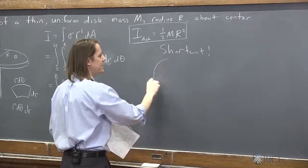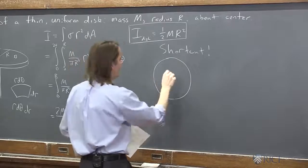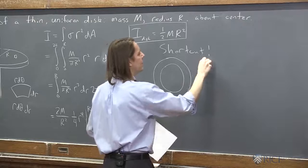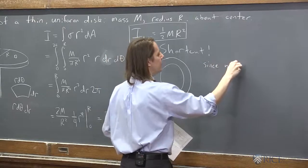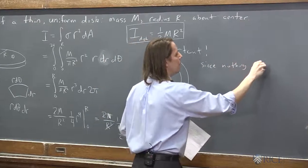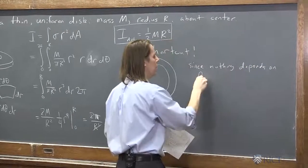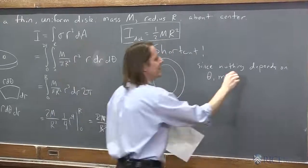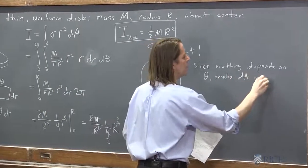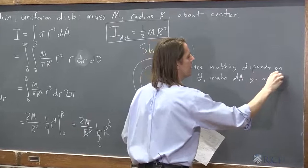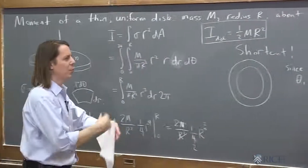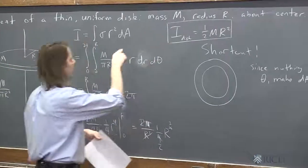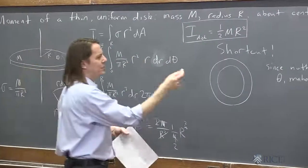The shortcut way says, here's the disk and the differential area. Since nothing depends on theta, make dA go around theta. You can't do it with R. You can't just write 1 dA for R and call it pi R squared because things do depend on R. There's an R in our formula here. There's an R in the differential. But theta shows up nowhere.